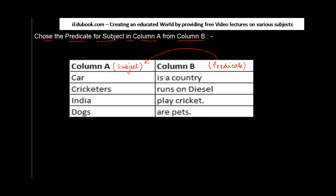If you read right now, it says 'car is a country' — which is incorrect, car is not a country. 'Cricketers run on diesel' — obviously not, they eat food and run. 'India plays cricket' — India is a country, how can it play cricket? 'Dogs are pets' — this seems to make sense.